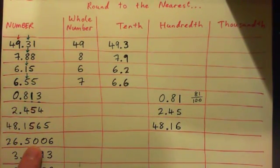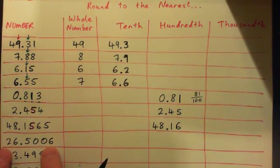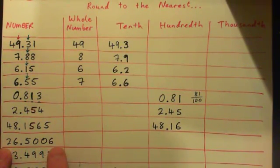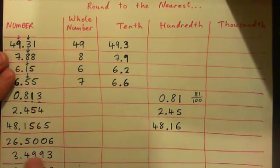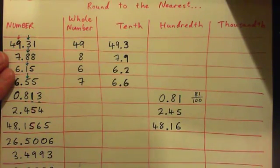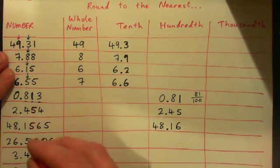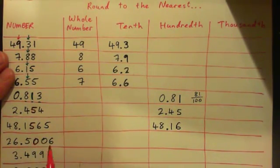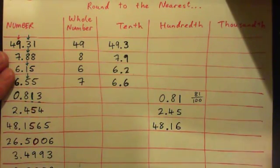Why don't we just go ahead and round this one to the nearest hundredth? 26.5006. So we've got tenths, hundredths, thousandths, ten thousandths. Hundredths is the zero. What comes after the zero? A zero, right? So we've got to round down. Ignore that six — that's further away.